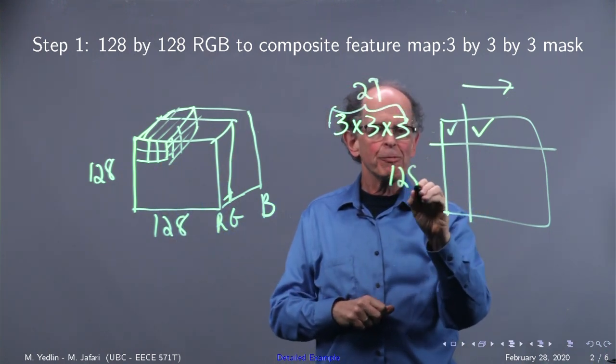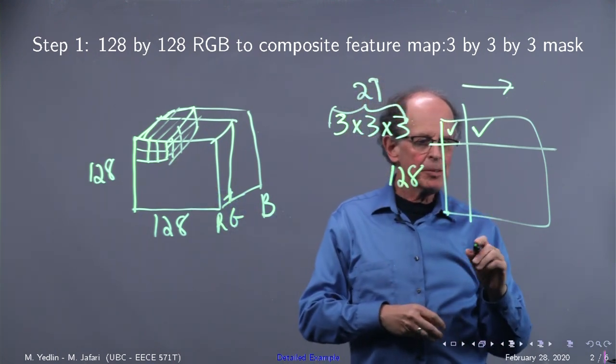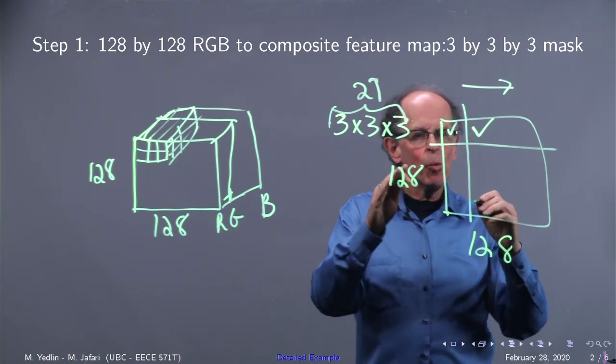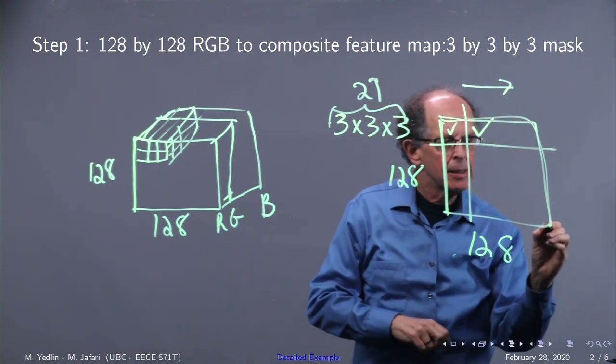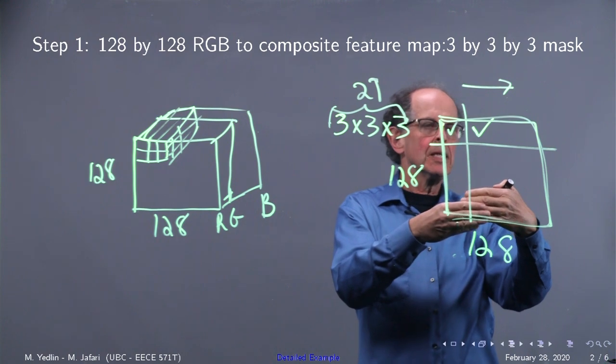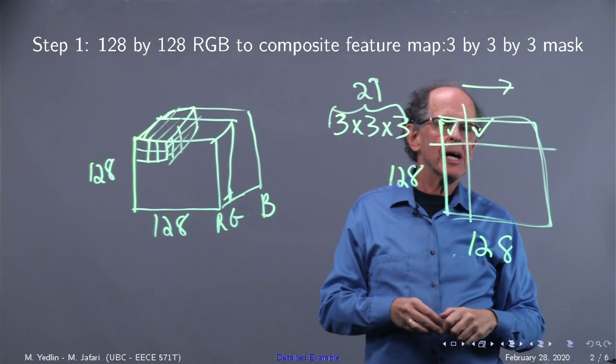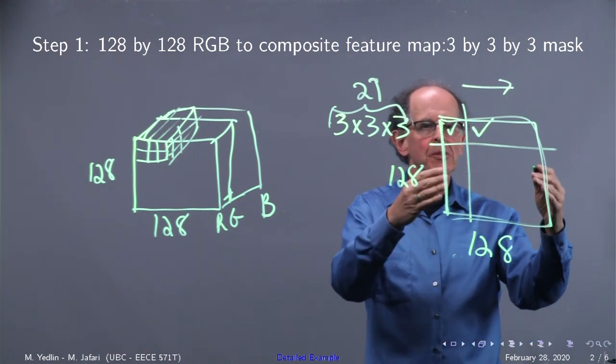Well, apart from a possible edge effect, because 3 doesn't divide evenly into 128, we're going to get an array 128 by 128 by 1. So we're going to get one plane. Then what we're going to do with this plane is we're going to do a ReLU, and that gives us one feature map.